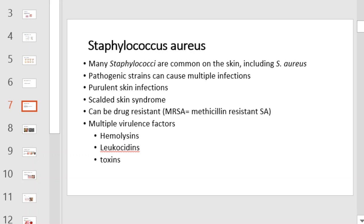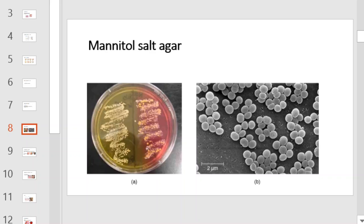The hemolysins, leukocidins, and toxins produced can cause a wide variety of symptoms for patients. This is an illustration of Staph aureus growing on mannitol salt agar. It metabolizes the mannitol in the plate and causes a color change.